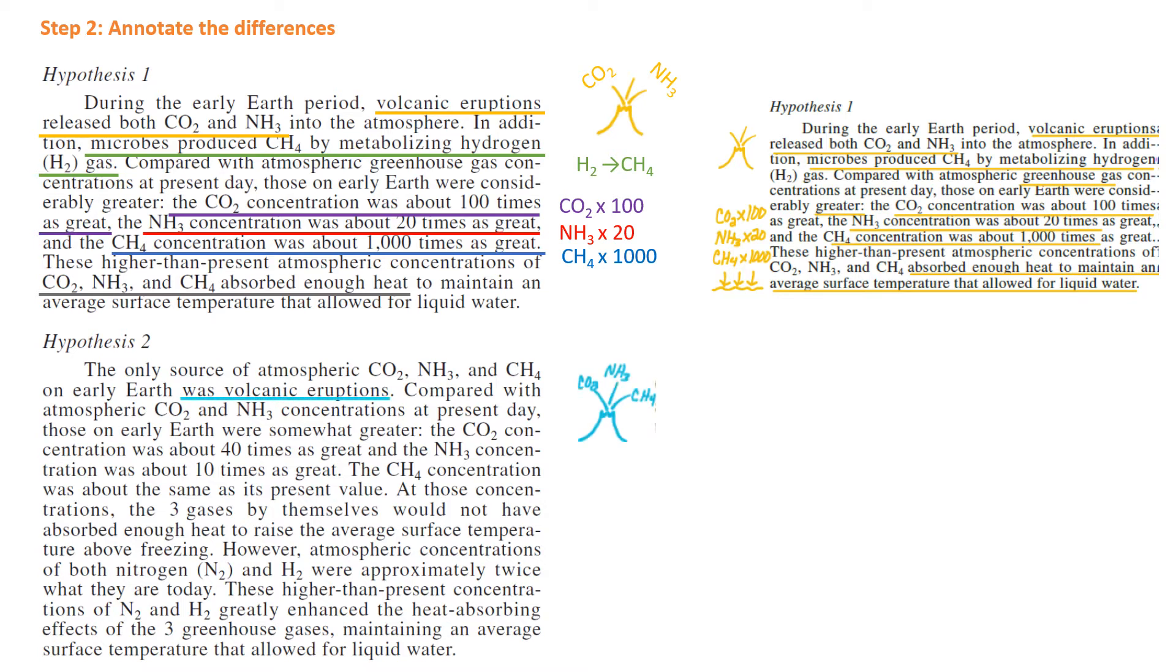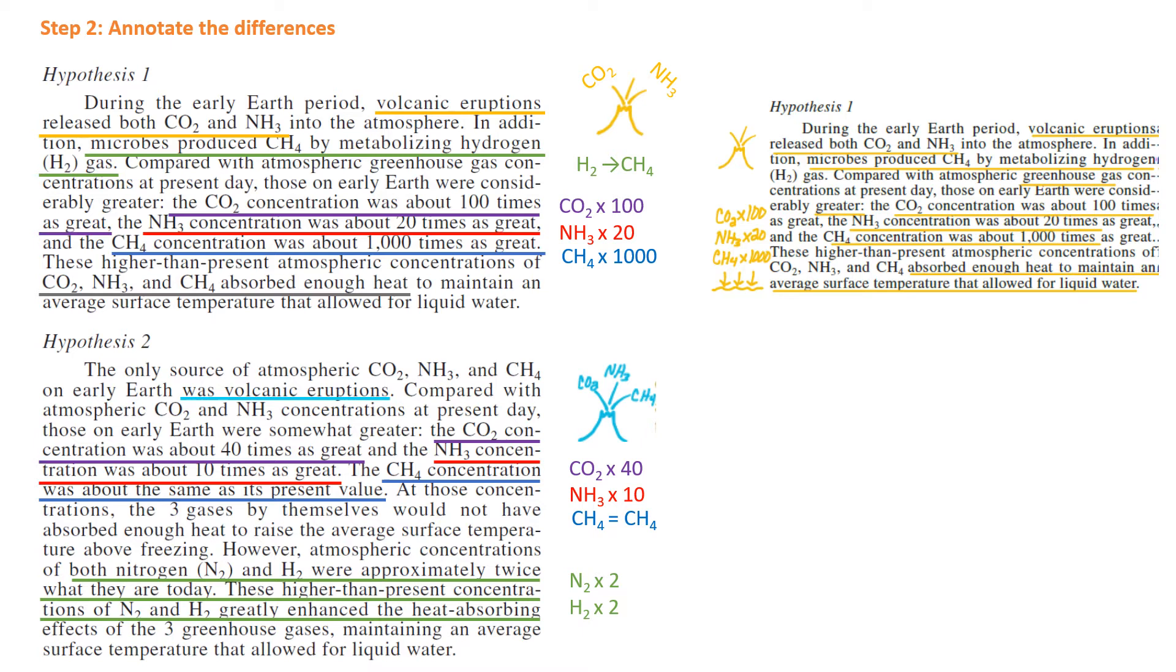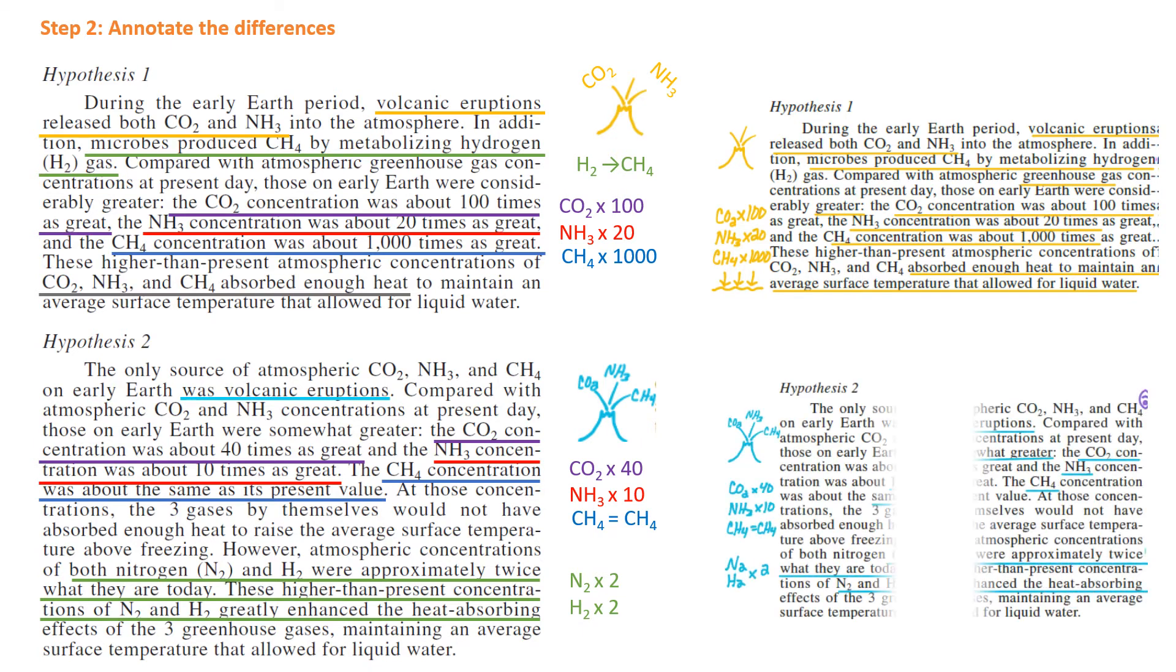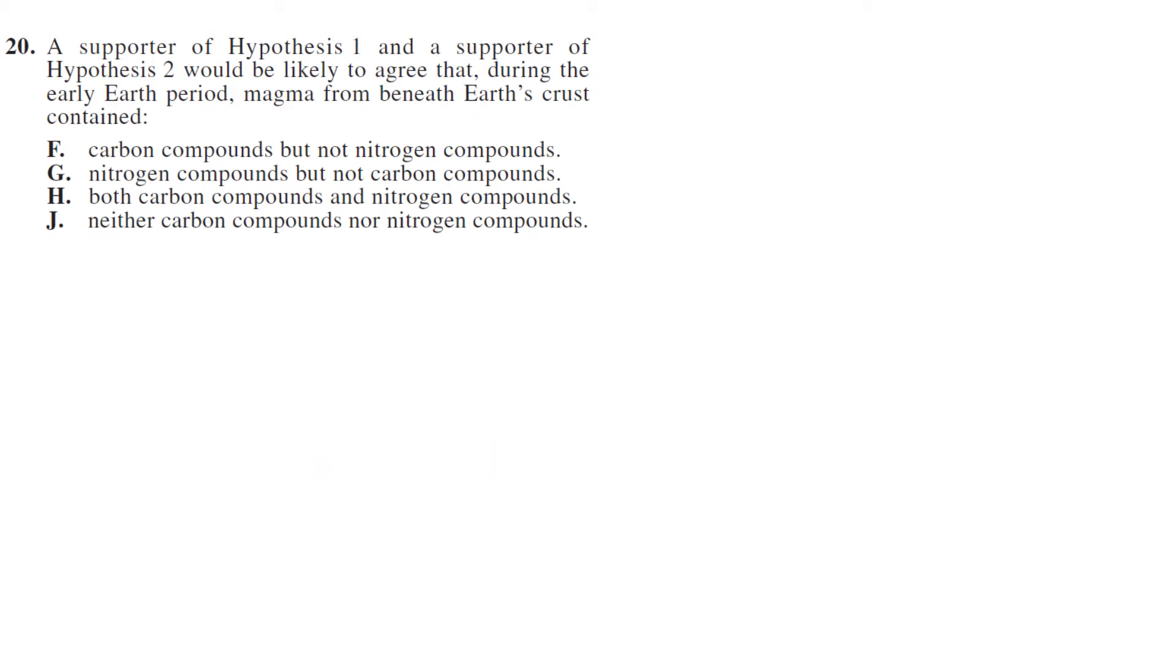Hypothesis two: CO2, NH3, and CH4 were due to volcanic eruptions. That's different than hypothesis one which only had CO2 and NH3. Then you have CO2 concentration was about 40 times as great, also different from hypothesis one. NH3 was about 10 times as great and CH4 was about the same. Then you have nitrogen and hydrogen were twice where they are today, and these concentrations enhance the heat absorbent effects. That's a big difference. This again is what mine looked like when I just wrote it. So it's going to take you between two and four minutes to get to the questions, and when you get to questions you just break them down and hopefully they're faster because you've read.